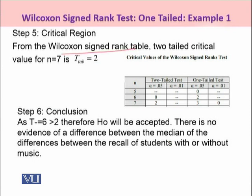Now, from the Wilcoxon signed rank table, which is given before you, because it was our two-tailed test, or our sample size, that was 7. So, against 7, for two-tailed test, the value against alpha 0.05, it is equal to 2. So, students, the T tabulated is being taken as 2. And the last thing we need to do is to conclude the result on the basis of step 4 and 5.